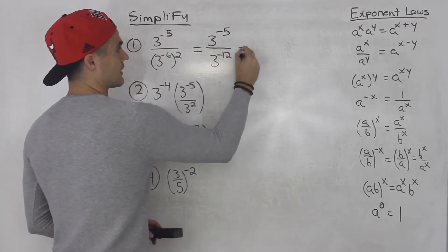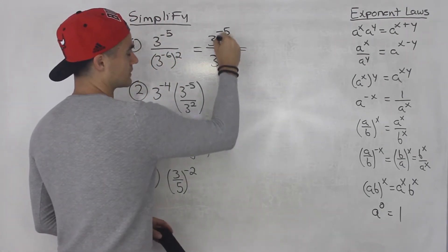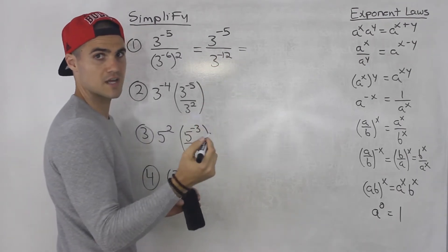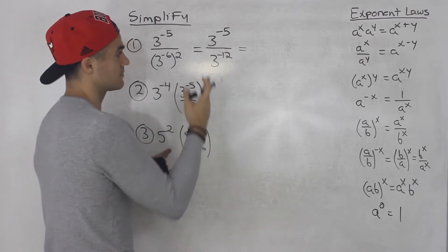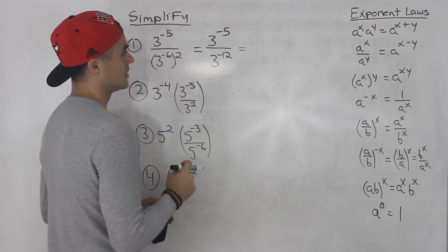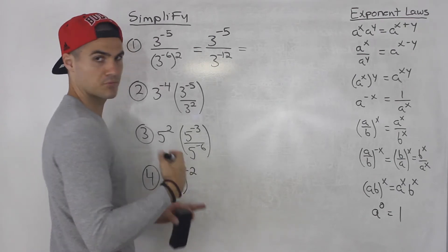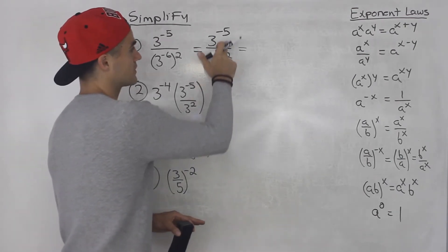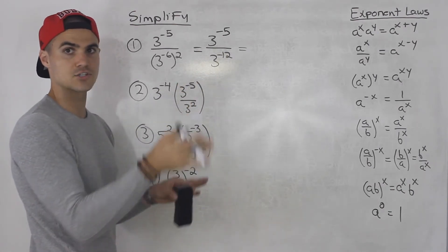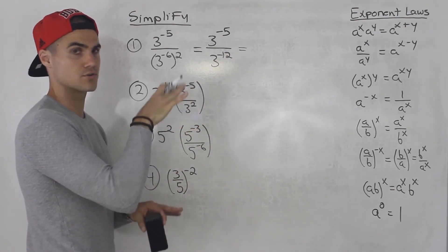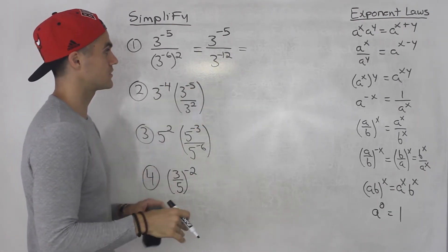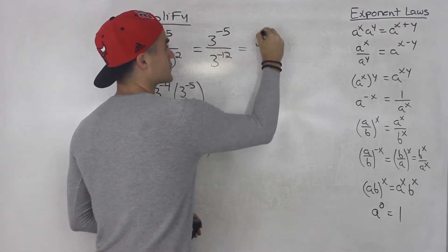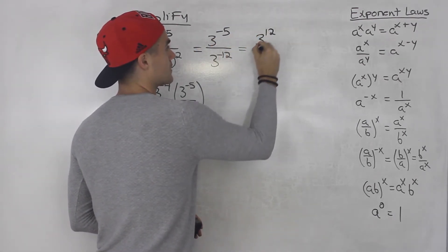From here we could simplify by subtracting exponents: negative 5 minus negative 12 gives positive 7, so the answer is 3 to the 7. But I prefer a preliminary step — whenever I have negative exponents in a fraction, I bring them over. So 3 to the negative 12 comes up to the numerator as positive 12.